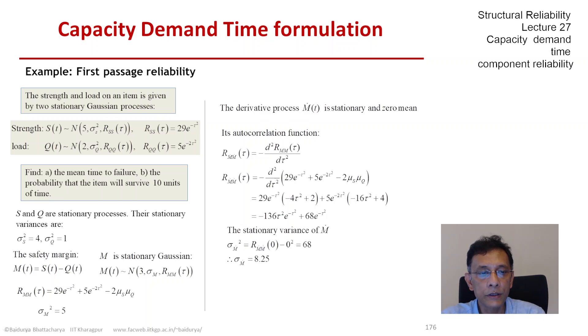Now M dot is a stationary process, so its variance would be its autocorrelation at 0 minus its mean squared, but again it is a zero mean process. So sigma_M_dot squared is R_M_dot(0) minus mean squared, which comes to 68, and the standard deviation of M dot is 8.25.